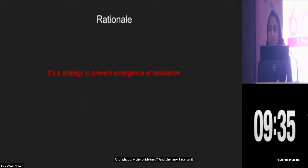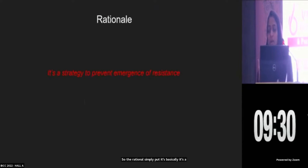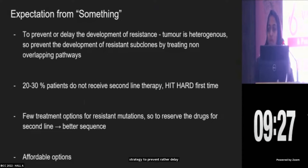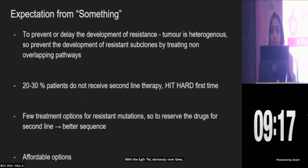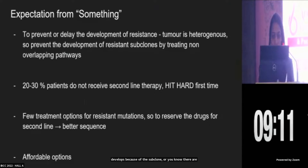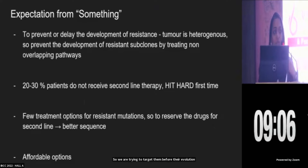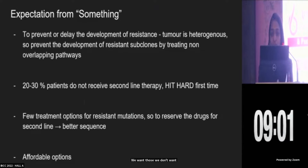The rationale, simply put, is a strategy to prevent — or rather delay — the emergence of resistance. When treating metastatic NSCLC with an EGFR TKI, over time resistance develops because of subclones that evolve by different mechanisms. So we are trying to target them before their evolution — right in the beginning — by devising a non-overlapping pathway to treat the disease.